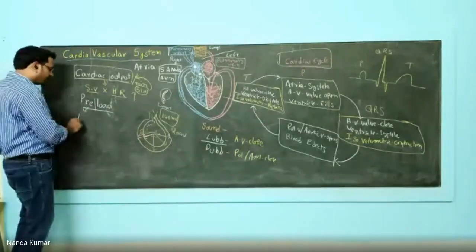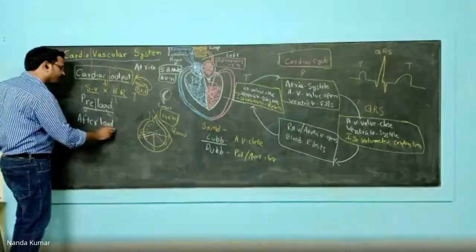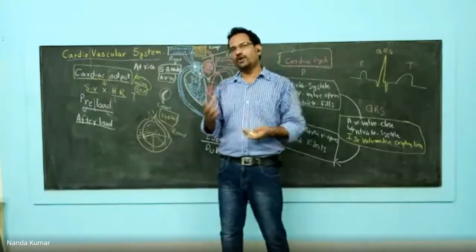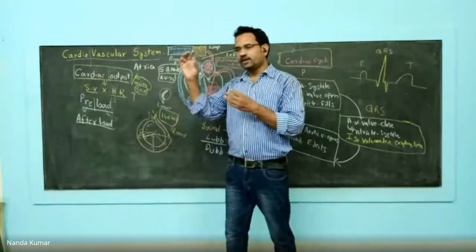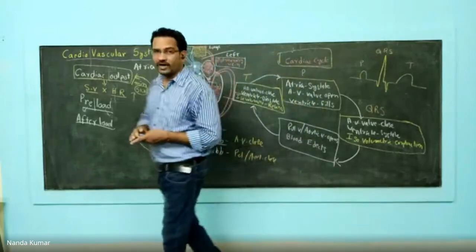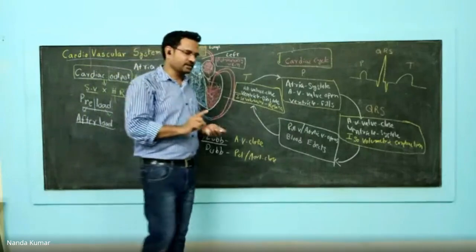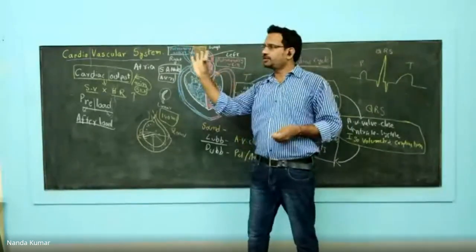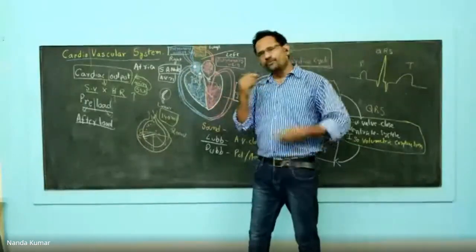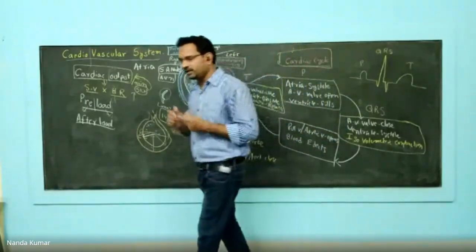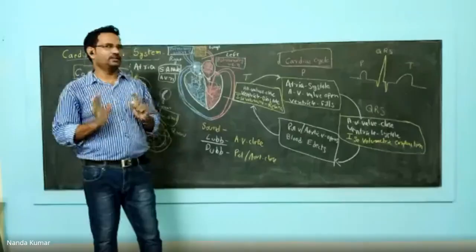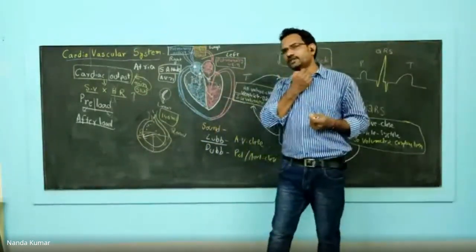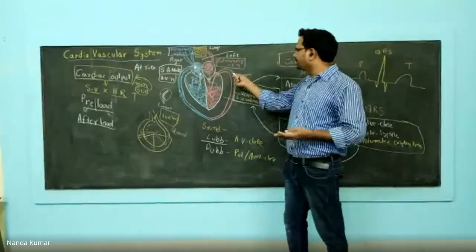Now after preload, you have another word called afterload. To understand this, think about blood pressure. We have numerical values for blood pressure: 120 by 80. 120 is systolic pressure, 80 is diastolic pressure, measured in mmHg. Where do you measure this pressure? Is it in the atrium, the ventricle, or somewhere else? You measure it from the aorta.